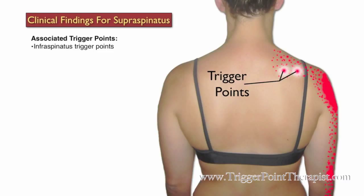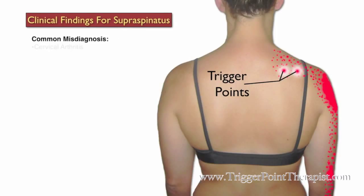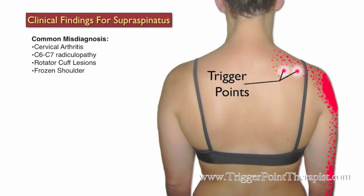Associated trigger points include the infraspinatus and other trigger points in the rotator cuff muscle group. Clients with active trigger points in the supraspinatus muscle are often misdiagnosed with cervical arthritis, C6-C7 radiculopathy, rotator cuff lesions, frozen shoulder, and bursitis.